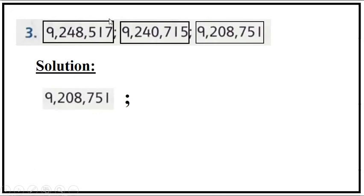Next is the middle number. We put 9,240,715. I put a semicolon and put the big number last, that is 9,248,517. This is our answer.